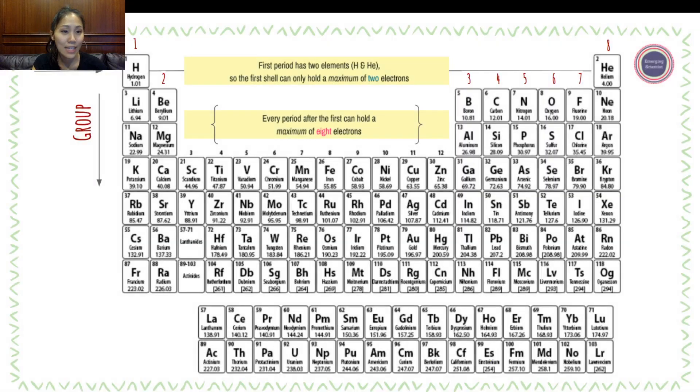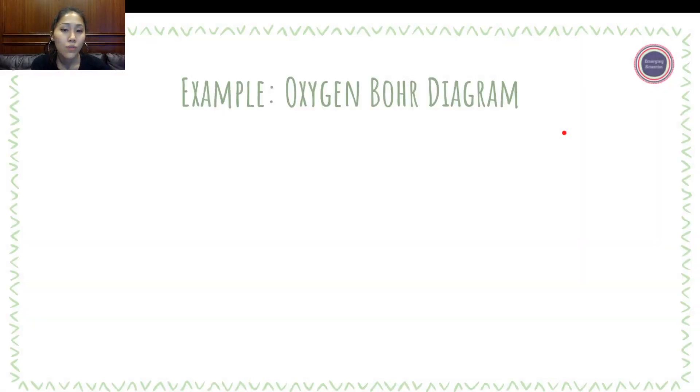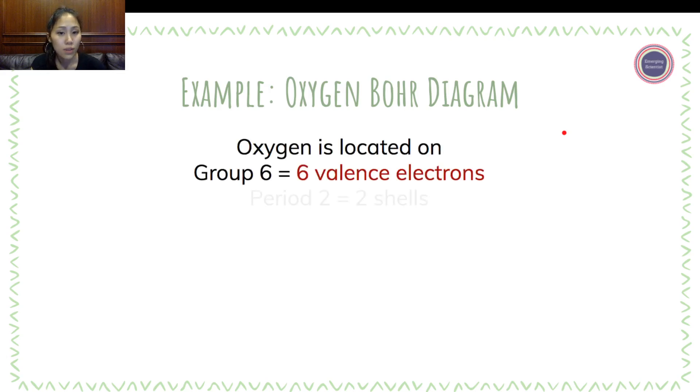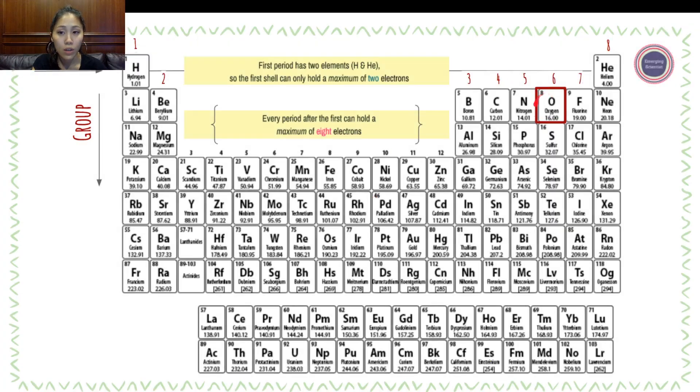So now let's take a look at an example. We're going to first start with oxygen. Oxygen is located on group 6 and period 2. Group tells us the number of valence electrons, so because it's group 6, there are six valence electrons. Period tells us the number of shells. Because it's on period 2, there are two shells. If we go back quickly, we should see oxygen is found in group 6 and in row 2, period 2.